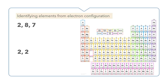We can also identify an element from its electron configuration. For example, 2,8,7 is the electron configuration of an element. We work out the total number of electrons: two plus eight plus seven equals 17. That means the atomic number is also 17. Looking on the periodic table, the element with atomic number 17 is chlorine.